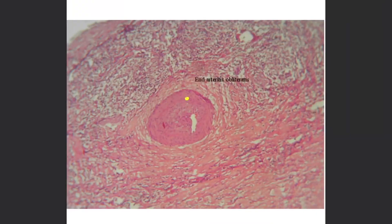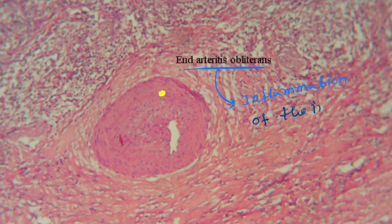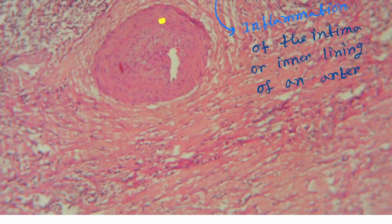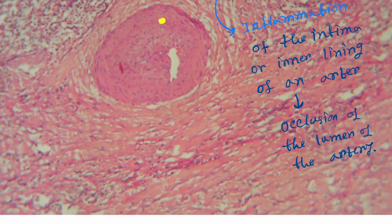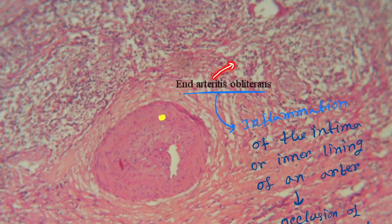Also lymphocytes are present as inflammatory cells. The most important feature is endarteritis obliterans — this means inflammation of the intima, or inner lining, of an artery, which causes occlusion of the lumen of the artery. Here you can see endarteritis obliterans — this is the most important feature.